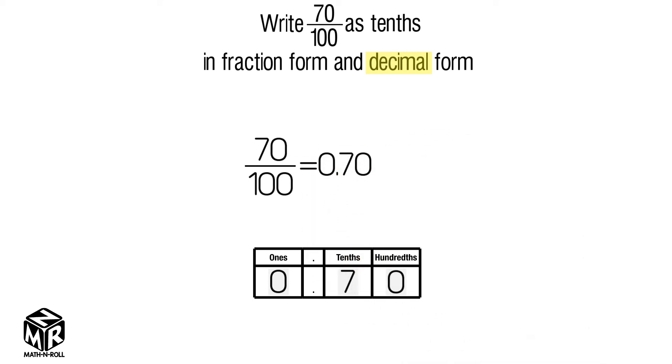We have to write 70 hundredths as tenths in decimal form. There are no hundredths needed, so we can erase the zero in the hundredths place.